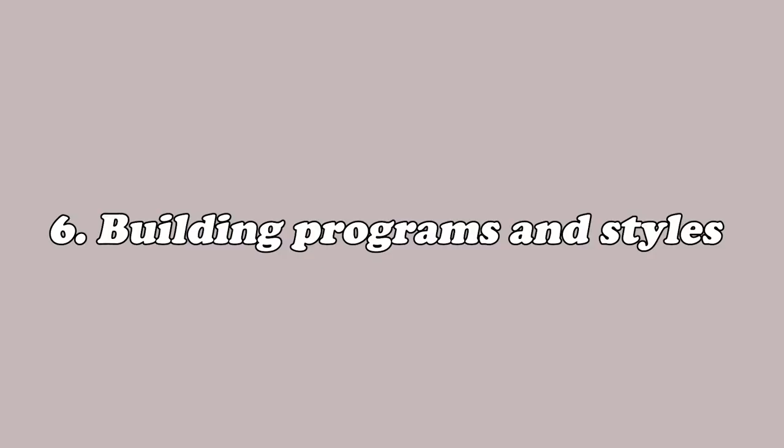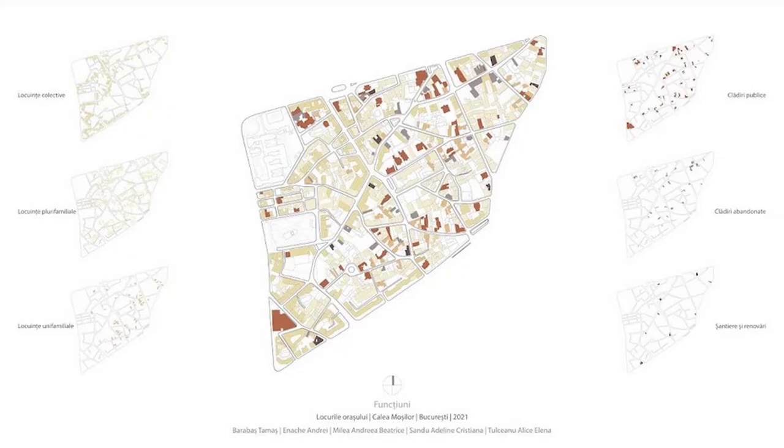Moving on from urban tissue to actual buildings, you need to analyze the buildings present there — their functions, for example whether your site is located near many shops or next to a school, because that can influence your proposal a lot. Also look at the architectural styles prevalent in that area, which is important because the area may be protected.